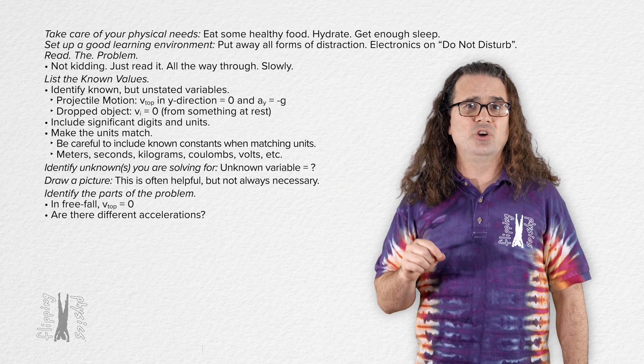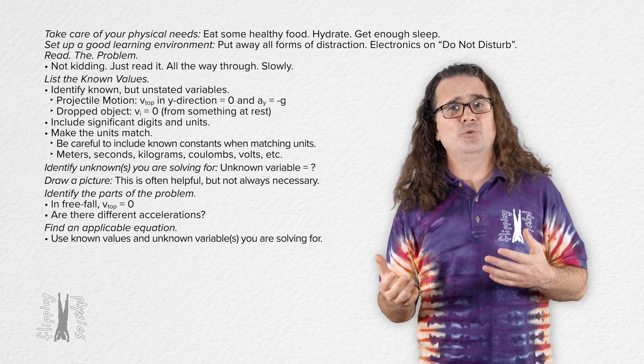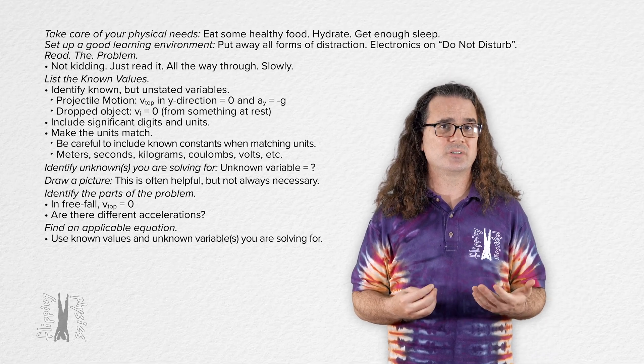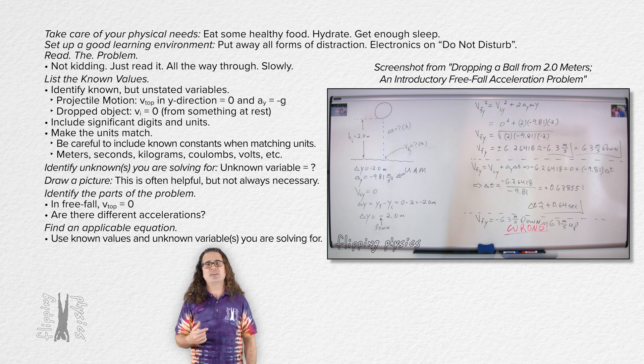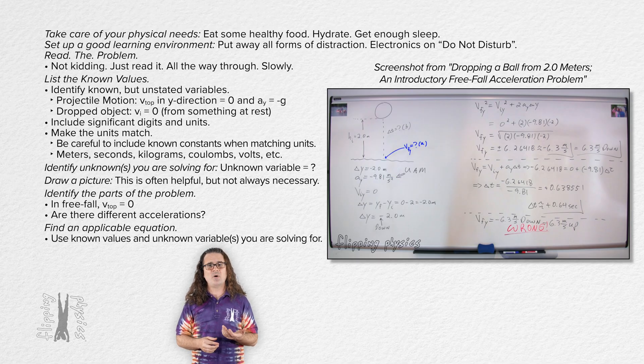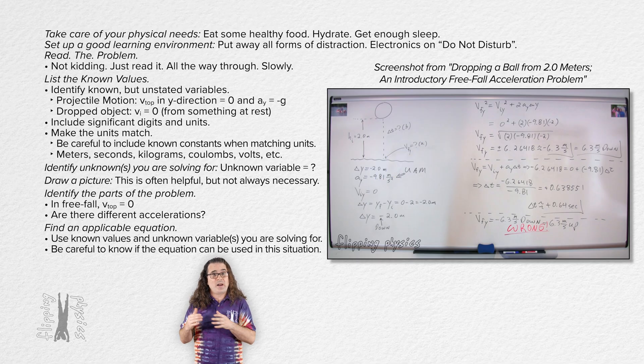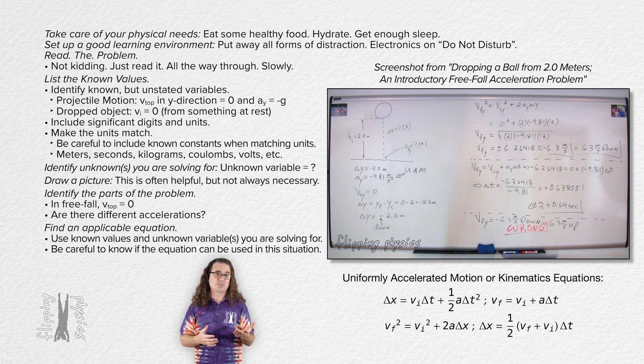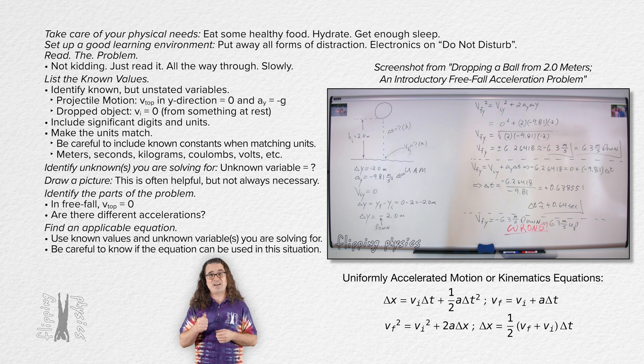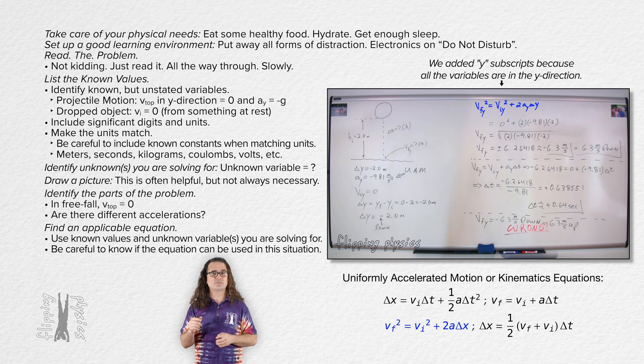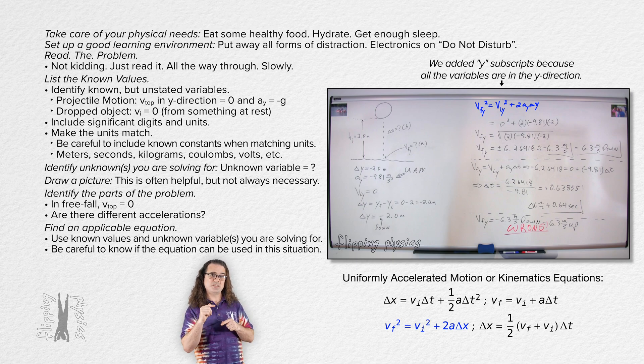Okay. Once you have done all of that, it is good to find an applicable equation. You should use your known values and the unknown value you are solving for as a resource at this point. For example, in this video, our known values were the displacement in the y direction, the acceleration in the y direction, and the initial velocity in the y direction. In part A, we were solving for the final velocity in the y direction, so we look for an equation that has those four variables in it. In this particular case, we know we were able to use one of the uniformly accelerated motion equations, which are also called the kinematics equations, because the acceleration is constant, meaning the acceleration does not change. So, all we have to do is look at our four uniformly accelerated motion equations, and find the one uniformly accelerated motion equation, which contains all four variables. In this particular case, that is velocity final in the y direction squared equals velocity initial in the y direction squared plus two times acceleration in the y direction times displacement in the y direction.